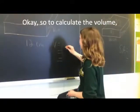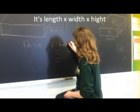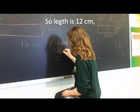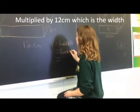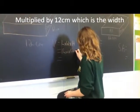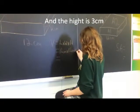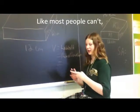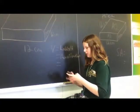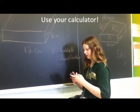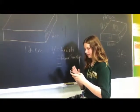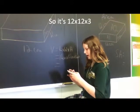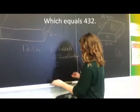To calculate the volume, it's length times width times height. So the length is 12 centimeters multiplied by 12 centimeters, which is the width, and the height is 3 centimeters. If you can't do this in your head like most people can't, you can use your calculator. So it's 12 times 12 times 3, which equals 432.